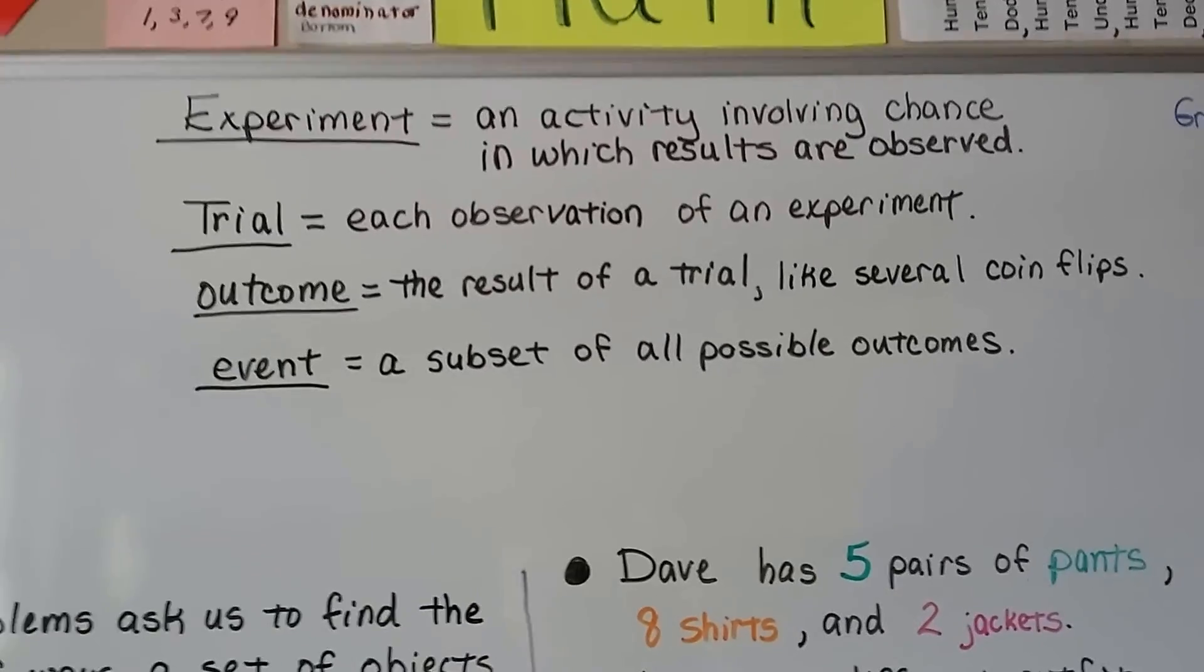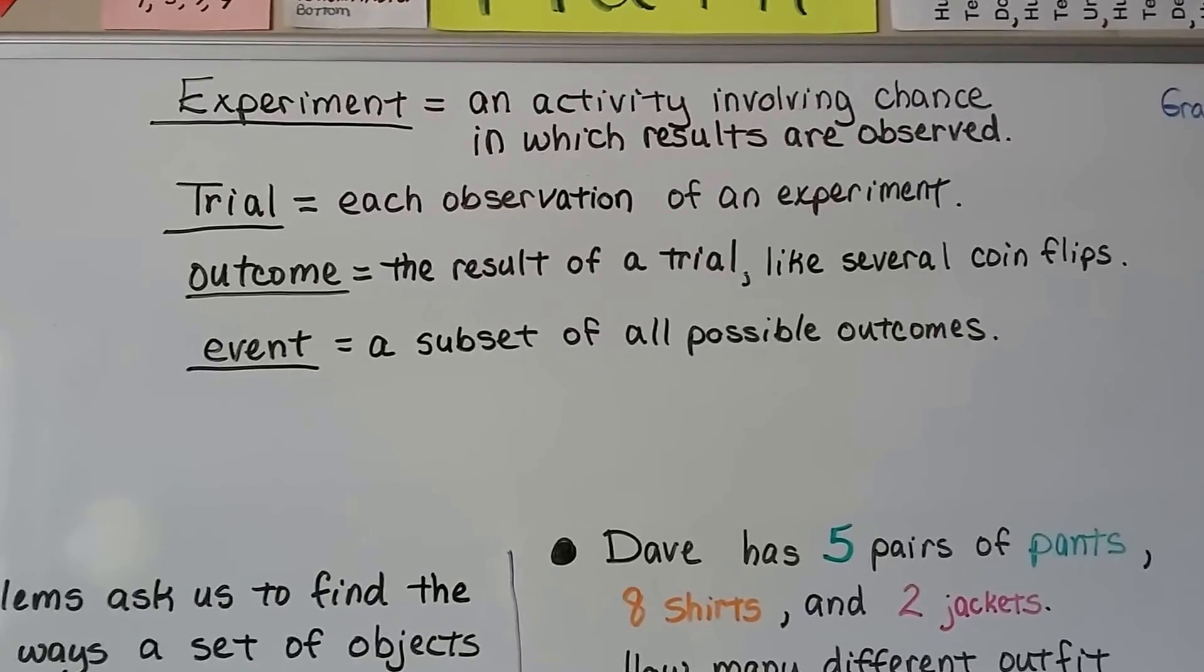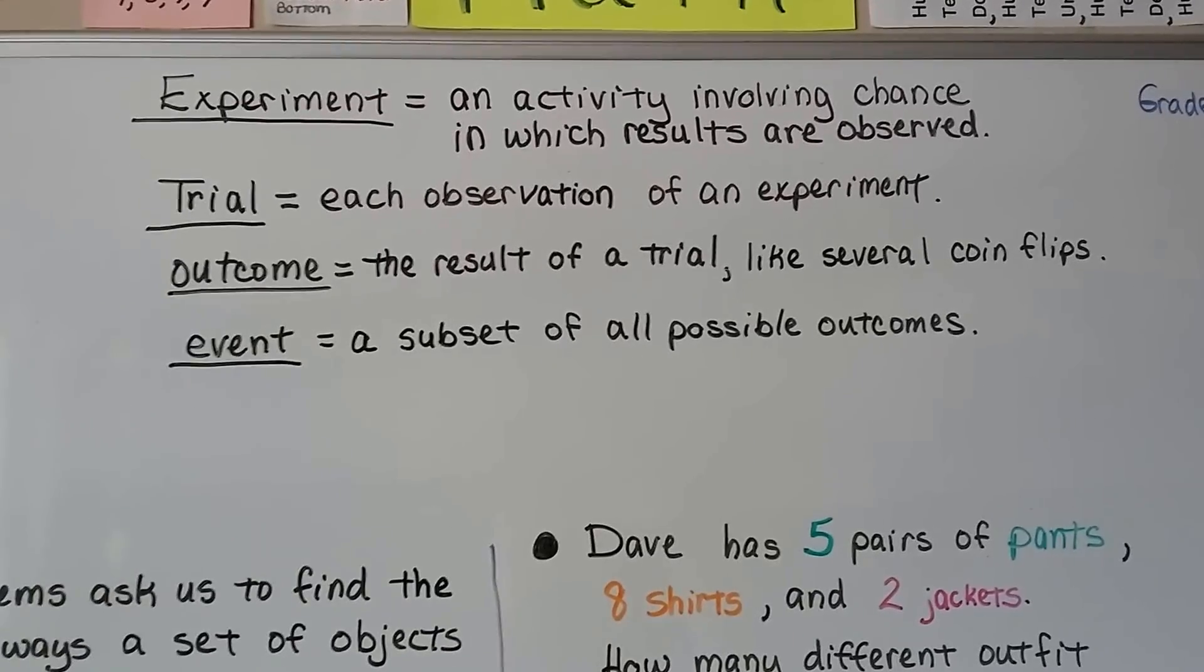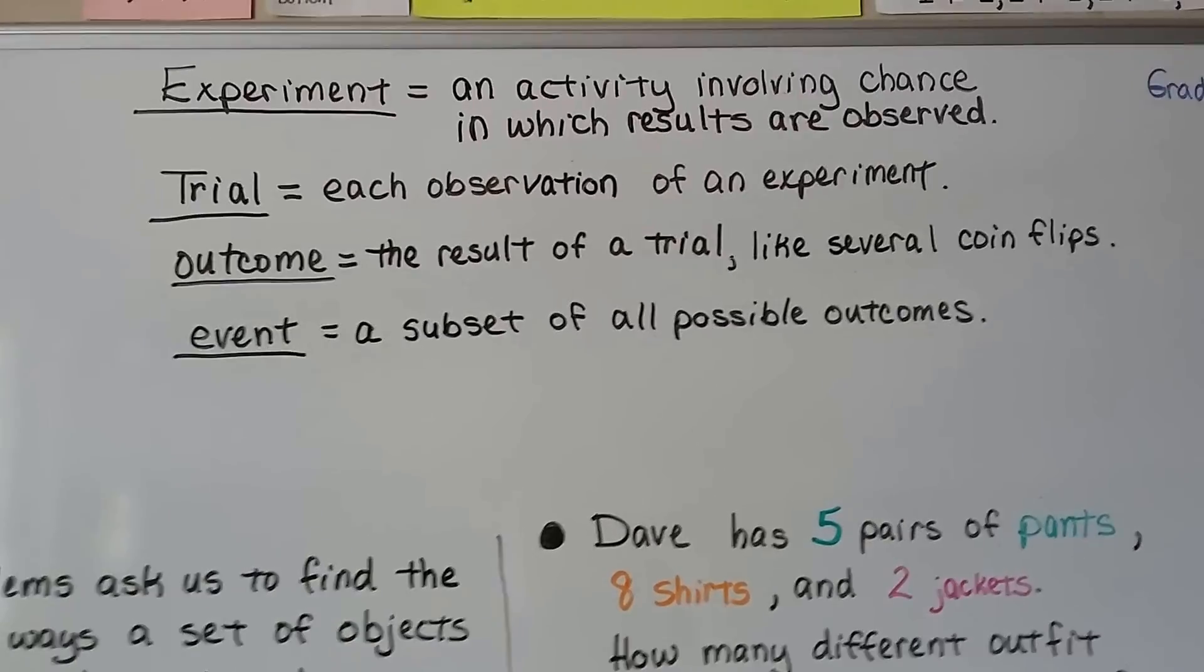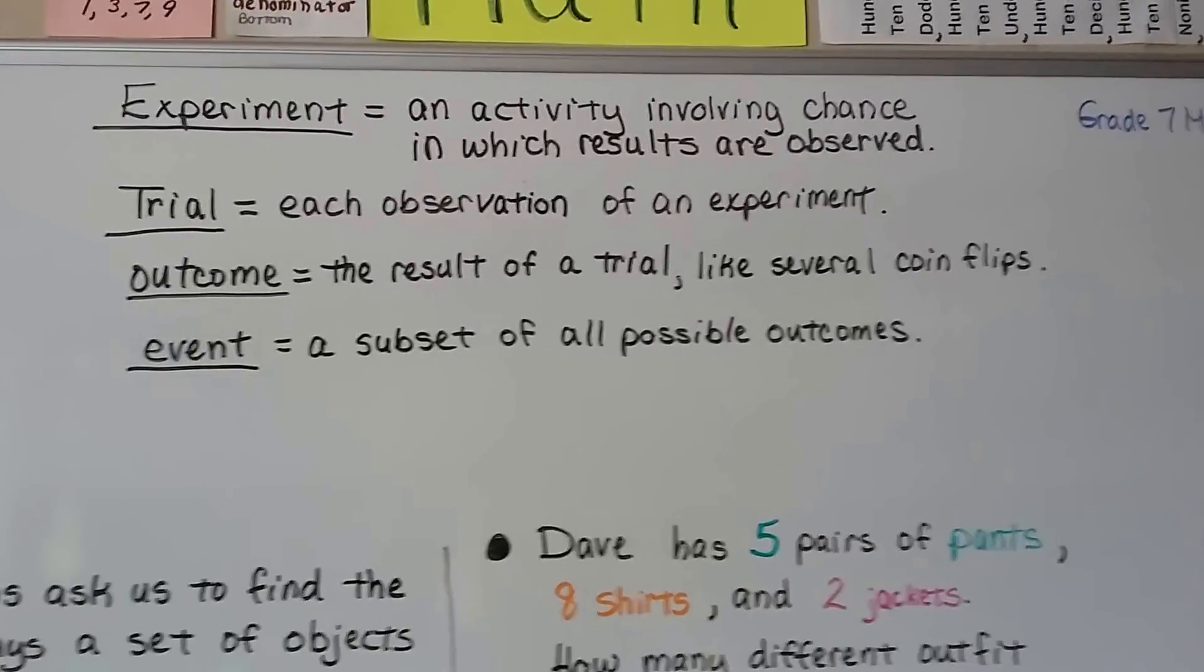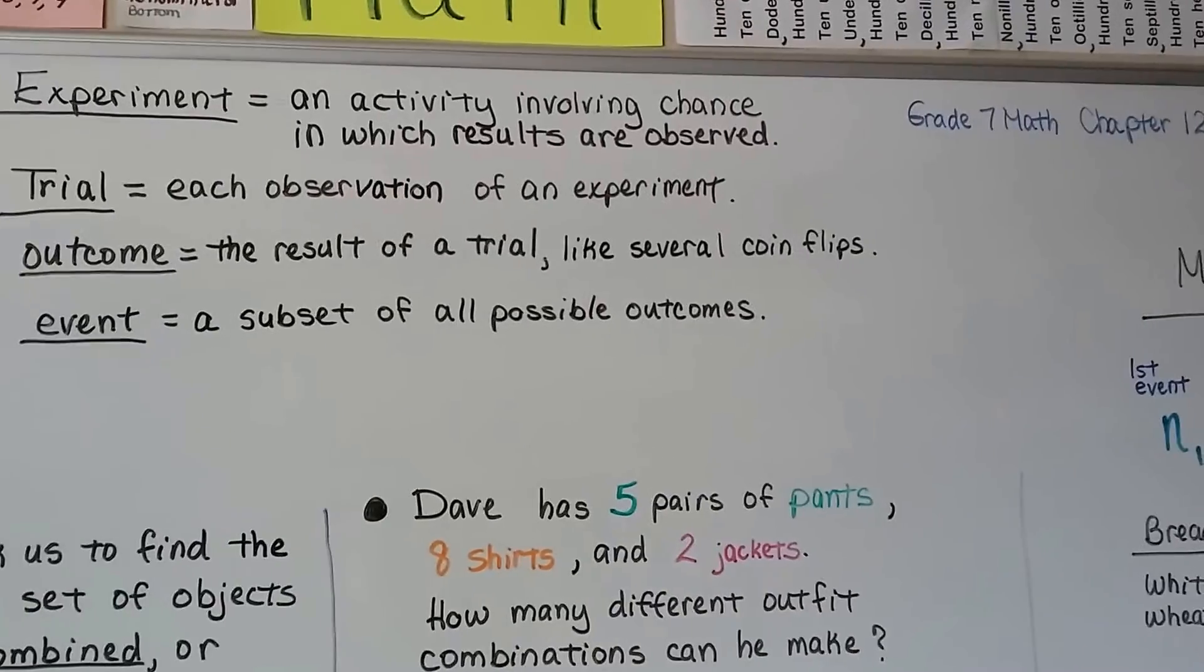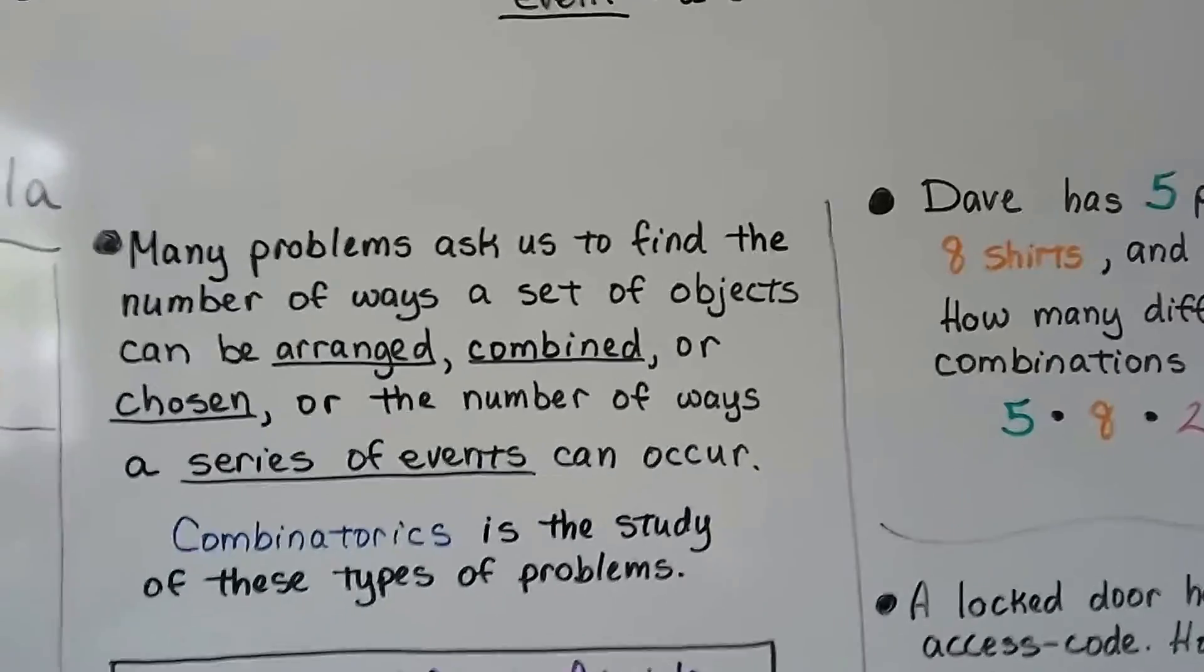Now, I don't know if you remember from seventh grade math, but an experiment is an activity involving chance in which results are observed. And a trial is each observation of an experiment. An outcome is the result of a trial, like several coin flips. An event is a subset of all possible outcomes. Now, if you've never learned any of this before, my advice is to click on the description to go to Grade 7 Math, Chapter 12, and watch those videos to understand.